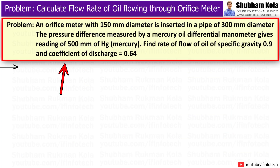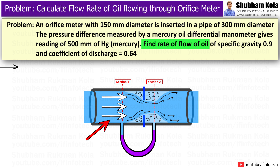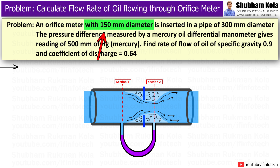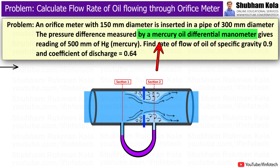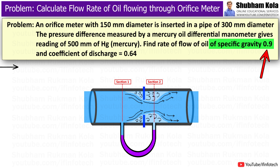In this video, we are going to solve a numerical based on an orifice meter, where we will calculate the flow rate of oil flowing through the pipe. The problem statement is: an orifice meter with 150mm diameter is inserted in a pipe of 300mm diameter. The pressure difference measured by a mercury-oil differential manometer gives a reading of 500mm of mercury. Find the rate of flow of oil with specific gravity 0.9 and coefficient of discharge equal to 0.64.